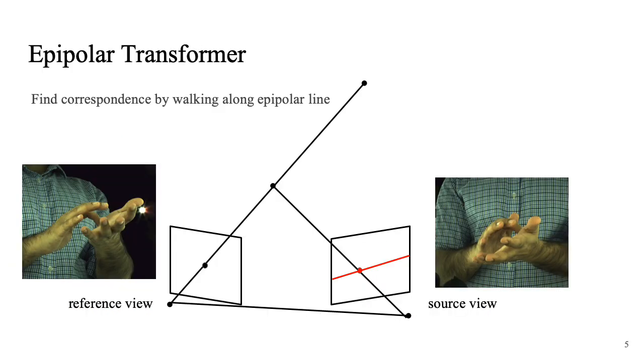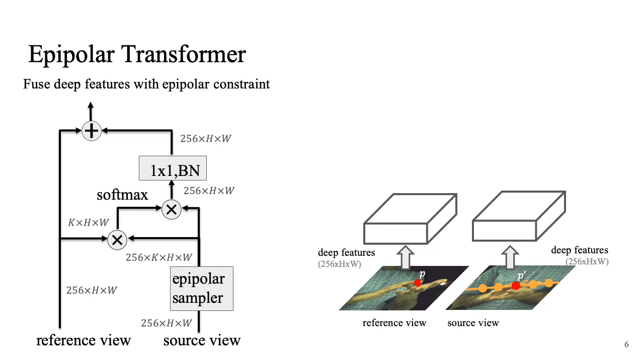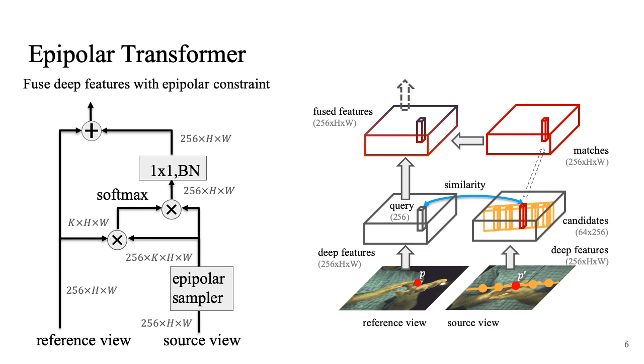Our intuition is to walk along the epipolar line to find the correspondence. We first extract features from both the reference view and the source view. For each query in the reference view, we extract the feature on the epipolar line of the source view. Then we do a feature matching based on cost and similarity. The matched feature are merged into the original feature, which is fed into the next stage of the convolutional neural network.